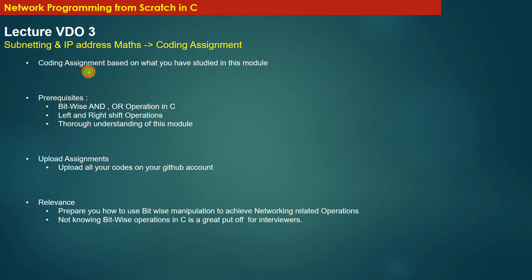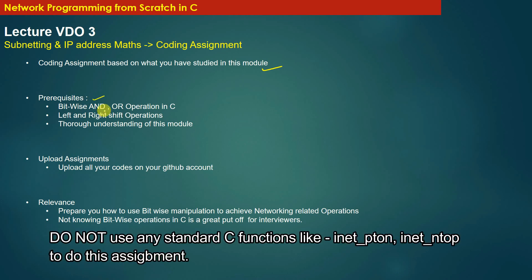Here are some coding assignments based on what you have studied in this module. The major part of this module was IP address mathematics, so here are a few programming questions on IP address mathematics. The prerequisites for doing this assignment are that you should be familiar with the bitwise AND/OR operations in C, the left and right shift operations in C, and of course you must have a thorough understanding of this module.